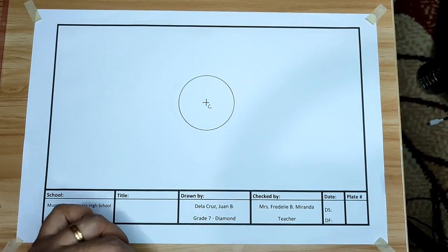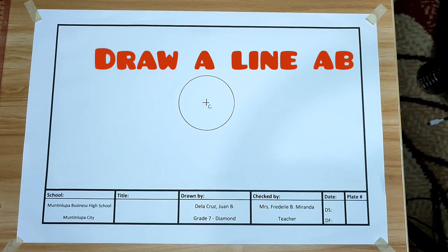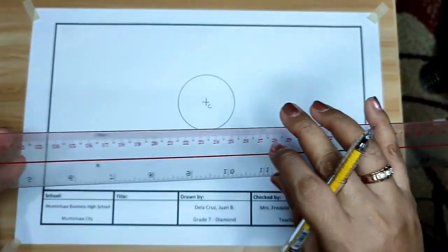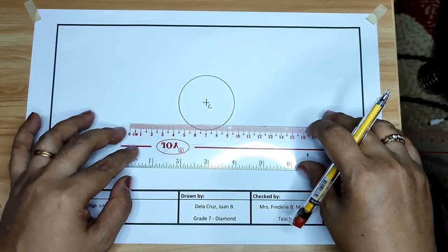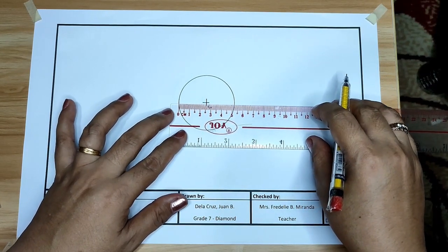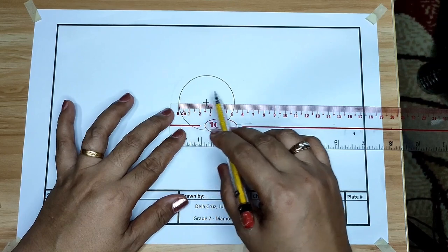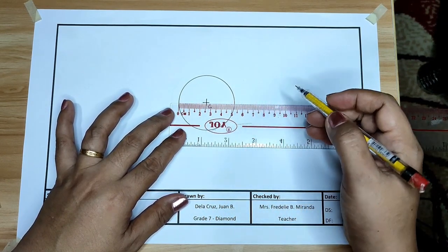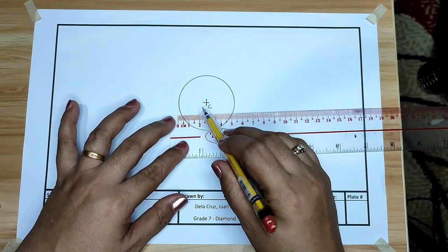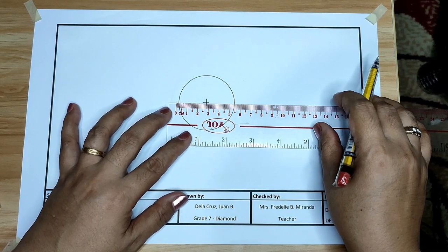Next, draw a line AB that passes through the center. Using your foot rule, draw a straight line, any line from your circumference to another part of the circle. Draw a straight line that passes through the center.